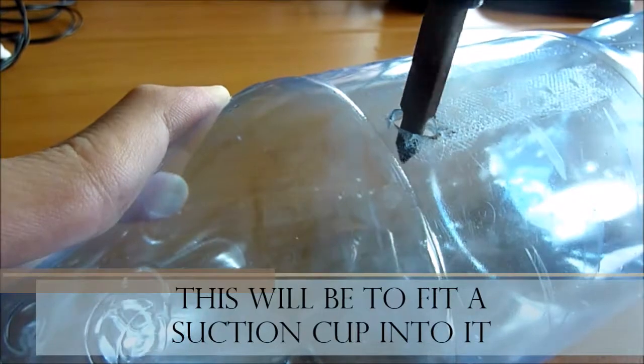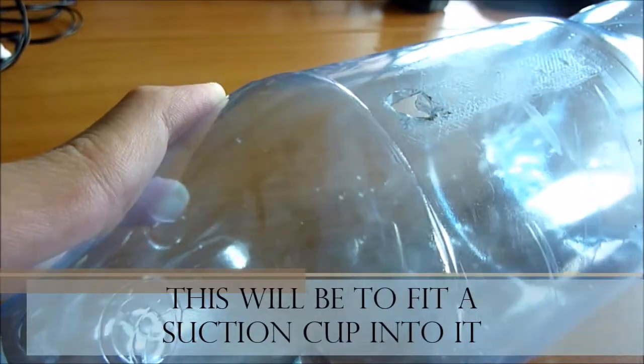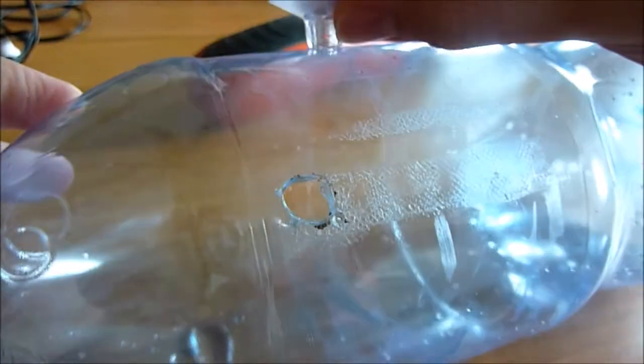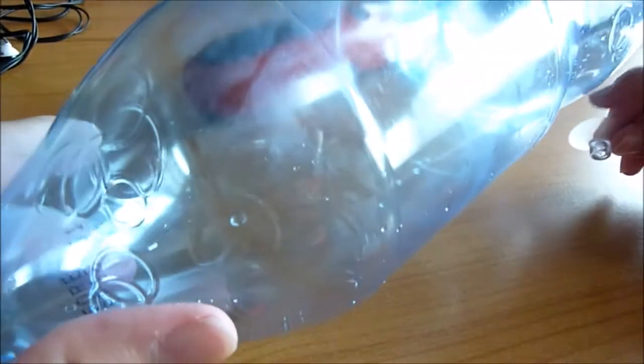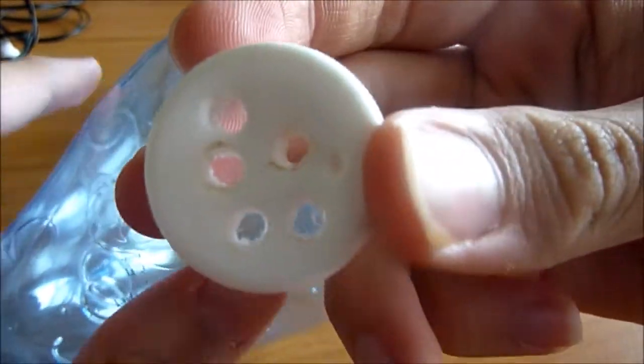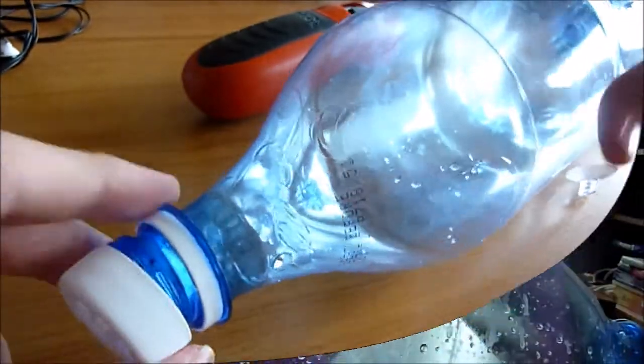Now I'm using this electric screwdriver to widen out the hole a bit so I'll be able to fit this suction cup, which you can find in pet stores, into this hole and it will allow this module to stand upright in the tank. We will be putting this on top later and I will show you how this actually works.